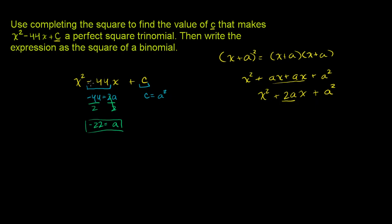And whenever you complete the square, it's always going to be half of the coefficient right here. Now, if that's a, what does c need to be? Well, c needs to be a² in order for this to be a perfect square.